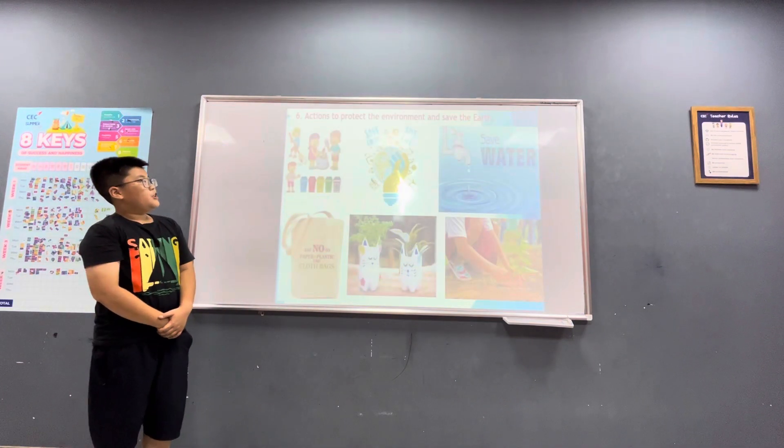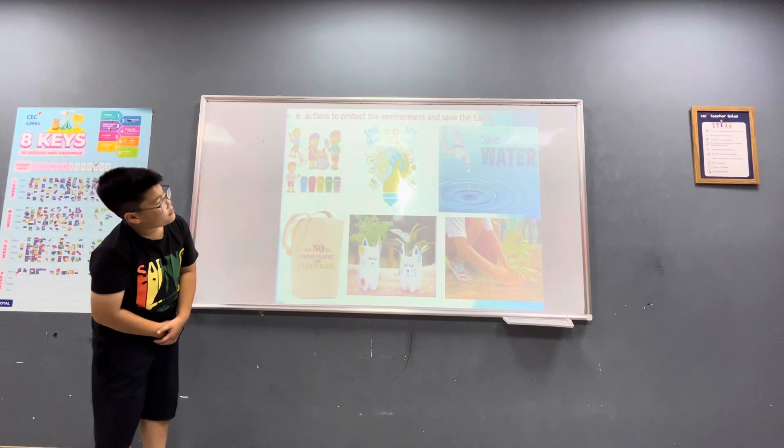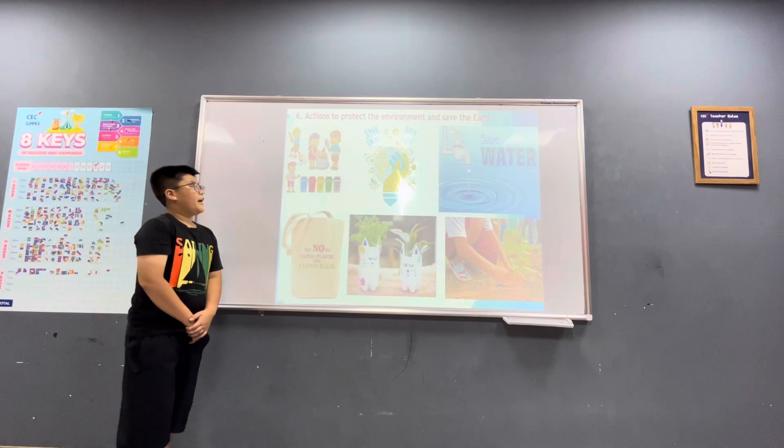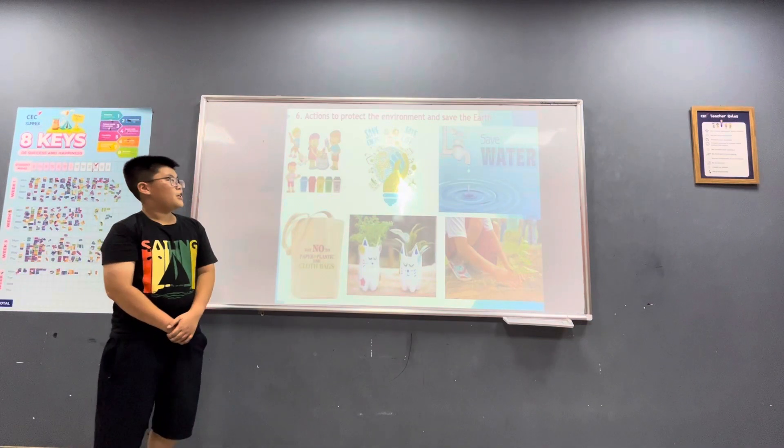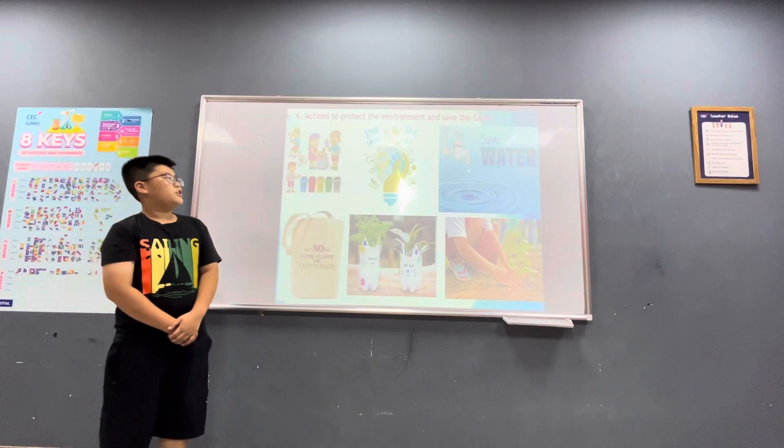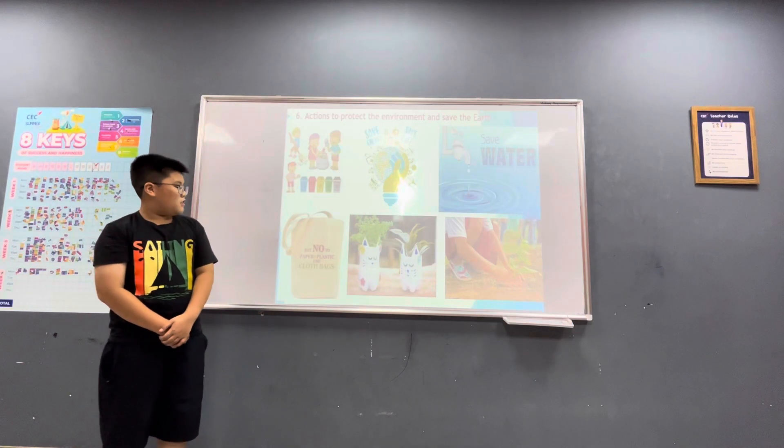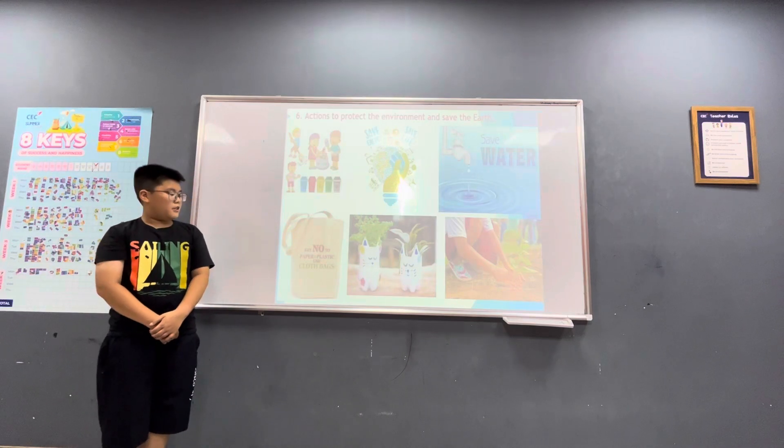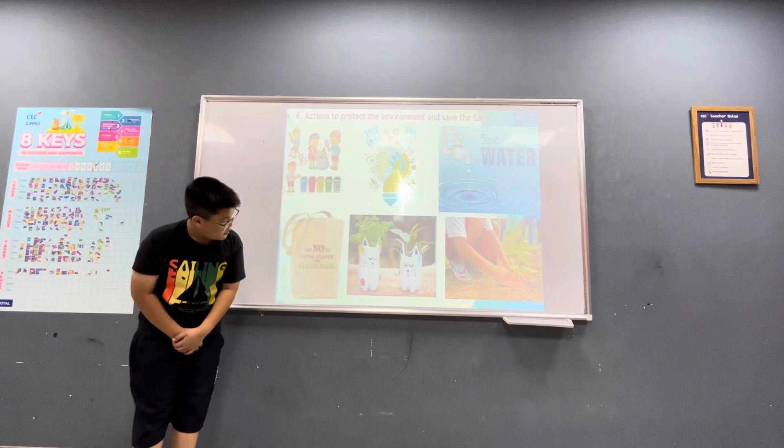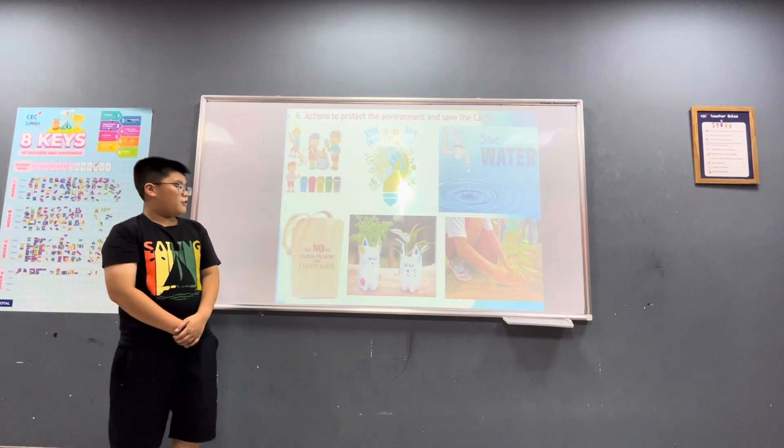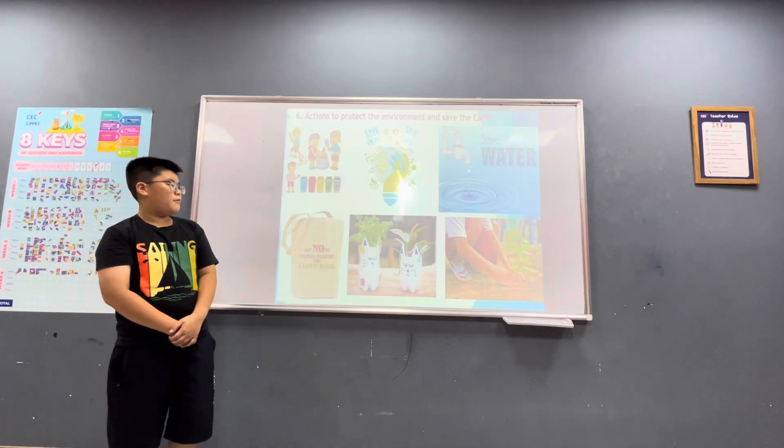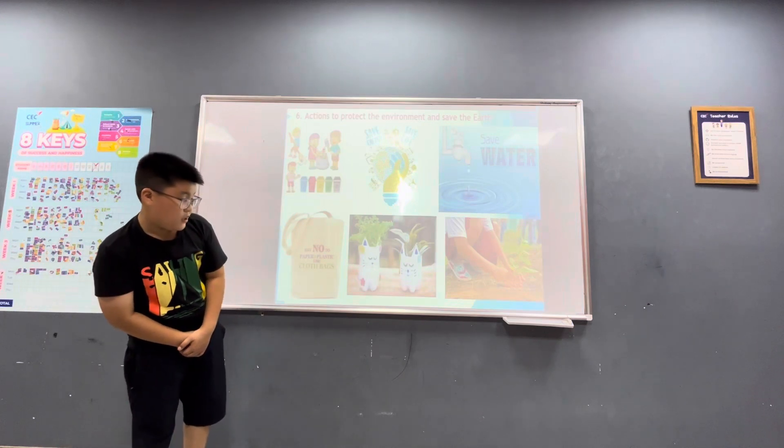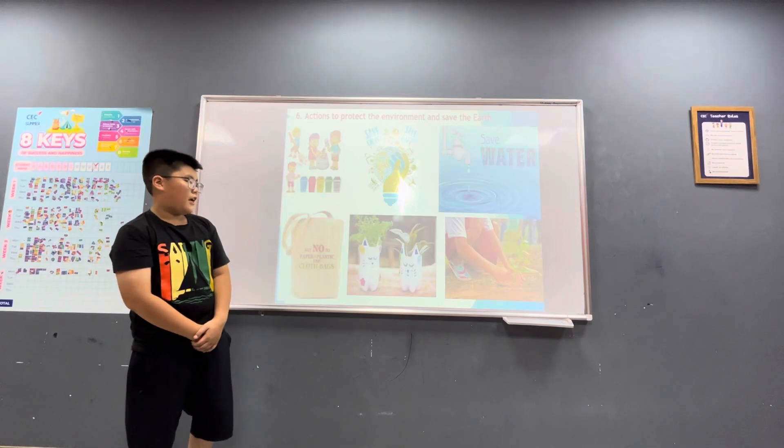There are many actions to protect and save the environment and save the Earth. For example, you can collect the rubbish and put it in the right bins, save energy to save life, save water. Don't use straws and plastic bags. You must use cloth bags. And recycle some plastic bottles to plant more vegetables in your garden for fresh air.